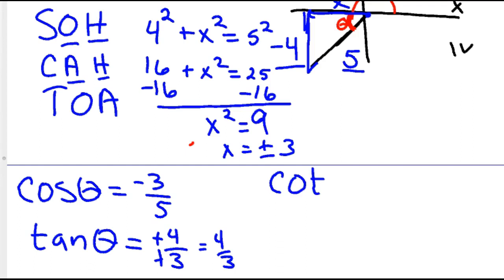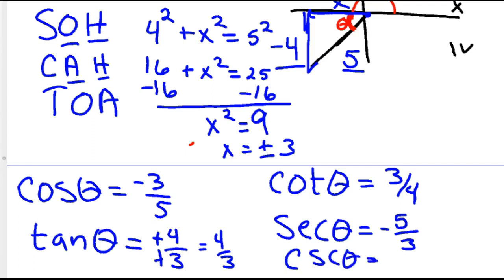Cotangent theta is the reciprocal of tangent, so that would be three-fourths. Secant theta is the reciprocal of cosine, so that would be negative five over three. And cosecant theta is the reciprocal of sine, which we already knew was negative four-fifths, so it would be negative five over four. And so those would be your other five trig functions for theta.